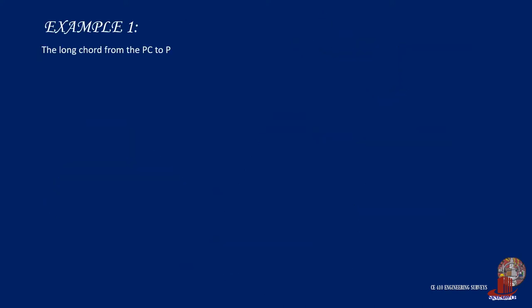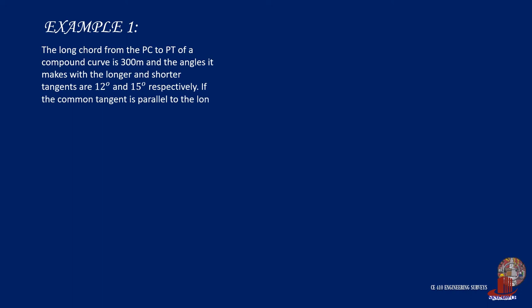Example number 1. The long chord from the PC to PT of a compound curve is 300 meters and the angles it makes with the longer and shorter tangents are 12 degrees and 15 degrees respectively. If the common tangent is parallel to the long chord, find the radii of the two curves.